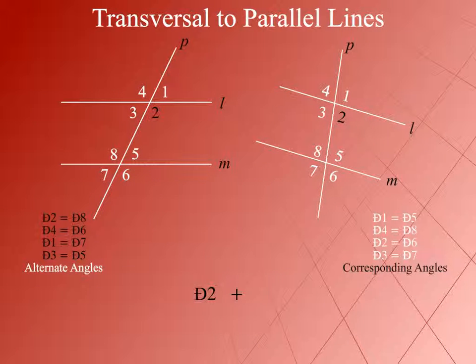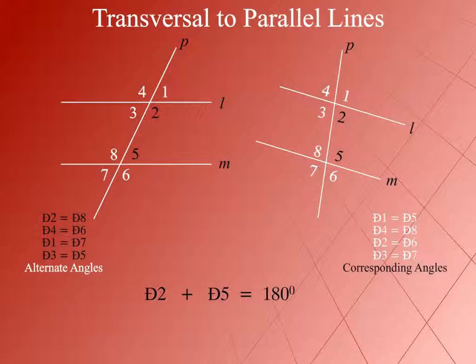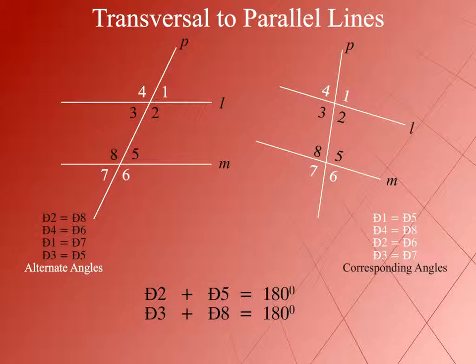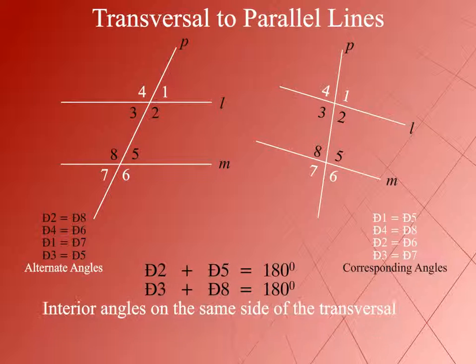Angle 2 plus Angle 5 is equal to 180 degrees, and Angle 3 plus Angle 8 is equal to 180 degrees. These are interior angles on the same side of the transversal.